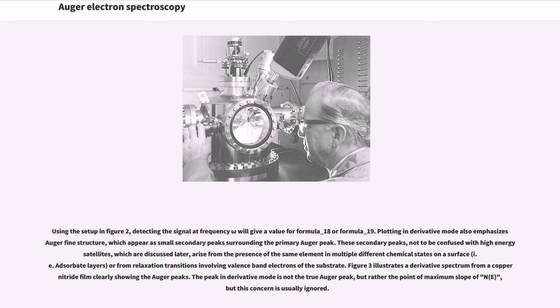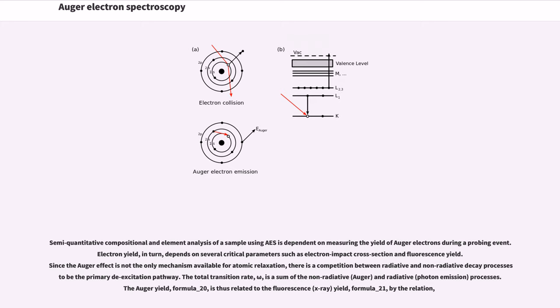Using the setup in Figure 2, detecting the signal at frequency omega will give a value for dN/dE. Plotting in derivative mode also emphasizes Auger fine structure, which appear as small secondary peaks surrounding the primary Auger peak. These secondary peaks, not to be confused with high energy satellites, which are discussed later, arise from the presence of the same element in multiple different chemical states on a surface, i.e., adsorbate layers, or from relaxation transitions involving valence band electrons of the substrate. Figure 3 illustrates a derivative spectrum from a copper nitride film clearly showing the Auger peaks. The peak in derivative mode is not the true Auger peak, but rather the point of maximum slope of N(E), but this concern is usually ignored.